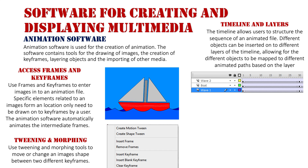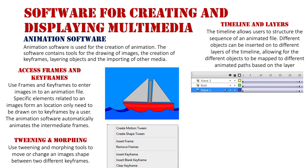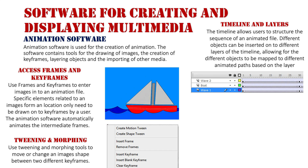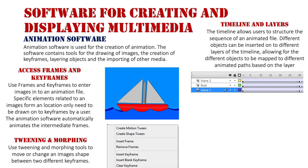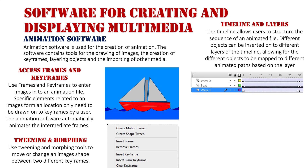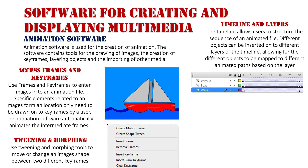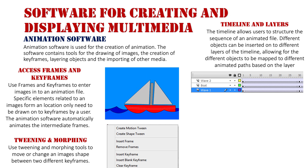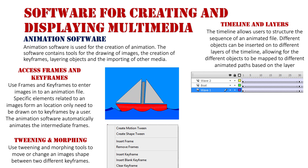I have three layers going on, all mapped and animated in different ways to make it look like the waves are flowing in different directions and the boat is flowing on top. Layers are extremely important — if I had two objects on the same layer they would have to follow the same animation path.